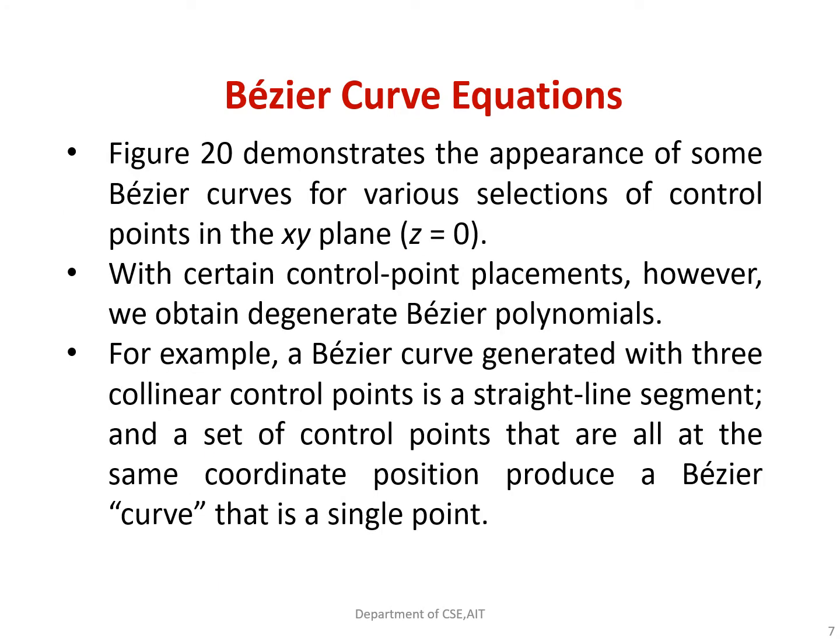In the next figure, we will see some Bezier curves for different selections of control points. For simplicity, we will assume all points only on the X-Y plane, making the Z value 0. Some special control point placements generate degenerate Bezier polynomials. For example, three collinear control points on a straight line segment will generate a straight line. If control points are all at the same coordinate position, the set of control points will produce a Bezier curve that is only a single point. These are special conditions of the Bezier curve.